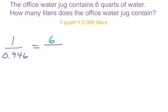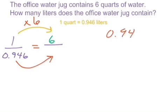So in order to solve this, I'm going to find the relationship here between my quarts, my top here. One going to 6, I have a times 6 relationship here. So I can actually apply the same thing to the bottom. And so I can do 0.946 times 6. And we can get our answer here.